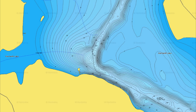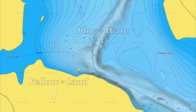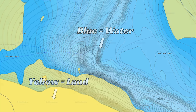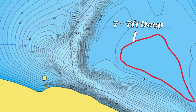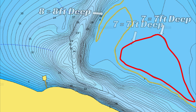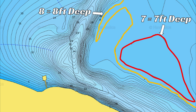I'm going to start by explaining how to interpret a contour line map. If you look at this map, the blue area is the water and the yellow area is the shoreline or land. Within the blue area you'll see a series of lines. Each of these lines corresponds to a specific depth of water on the bottom of the lake. For example, this line has a small number 7 on top of it, meaning it is 7 feet deep wherever that line is on the map. Therefore every single line on a contour map corresponds to a specific depth of water.